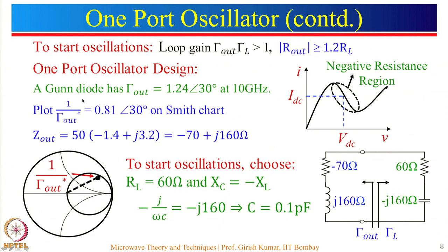Let us take a one-port oscillator design example using a Gunn diode. The Gunn diode has an I-V characteristic where current increases with voltage in one region, but in another region voltage increases while current decreases — this is the negative resistance region. To design an oscillator, we bias the Gunn diode in this negative resistance region, with DC voltage V_DC corresponding to DC current I_DC. When biased in this region, gamma_out of the Gunn diode will be greater than 1 because of its negative resistance.